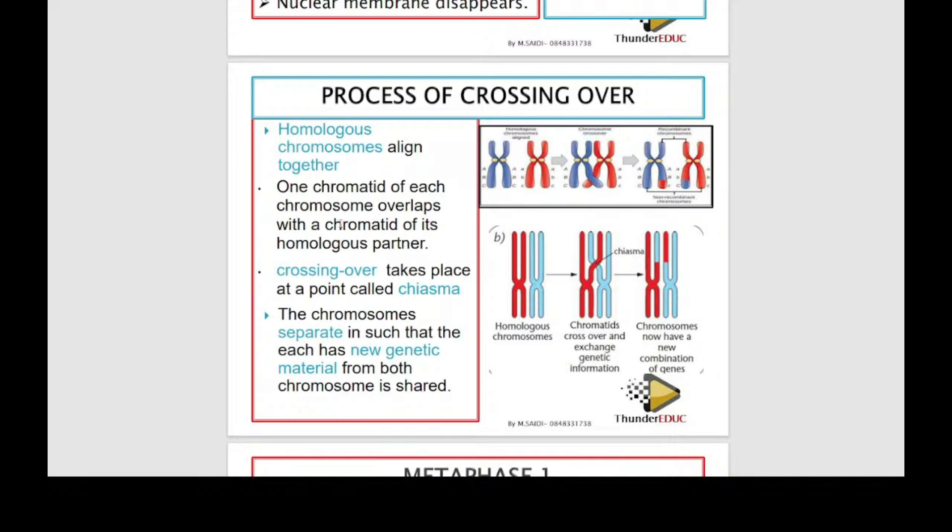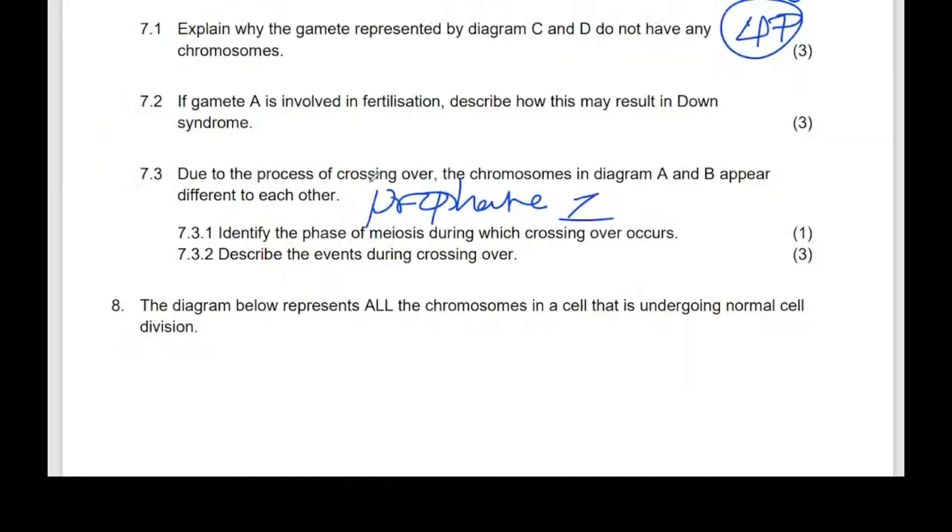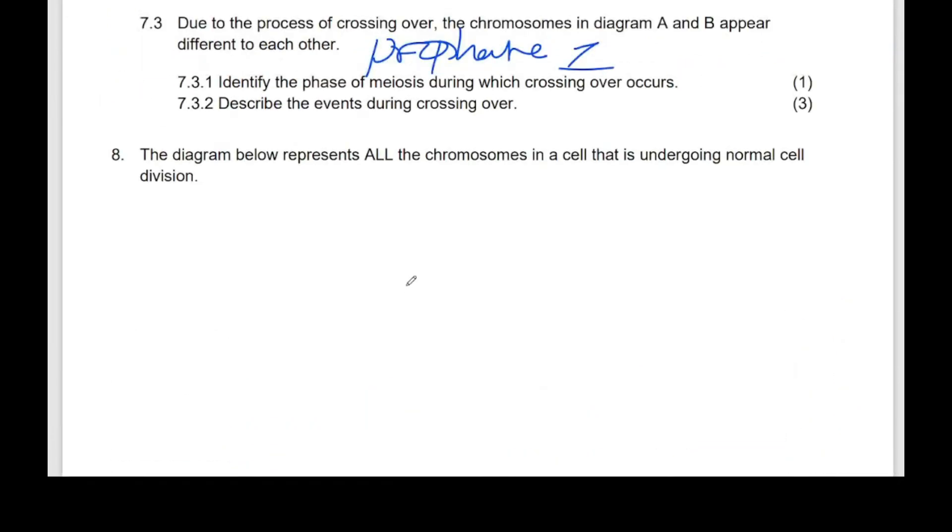You want a distinction? That book. All right, let's continue. Diagram below, we are almost done. Diagram below represents all the chromosomes in a cell that is undergoing normal cell division.